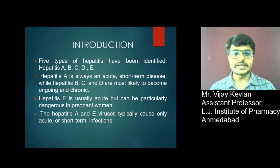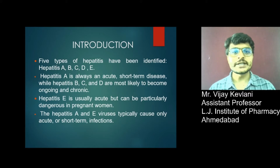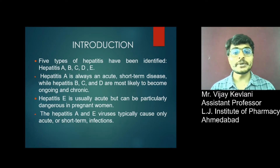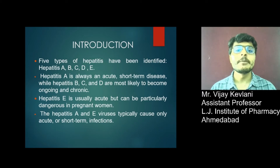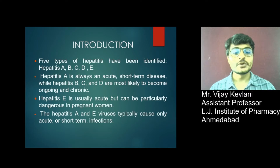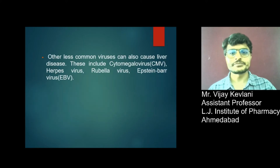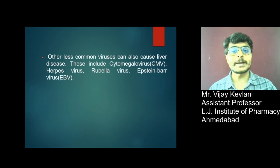In viral hepatitis, 5 types have been identified: Hepatitis A, B, C, D, and E. Hepatitis D is also known as delta hepatitis. Hepatitis A is always an acute short-term disease, while Hepatitis B, C, and D are most likely to become ongoing and chronic. Hepatitis A and E viruses typically cause only acute or short-term infection. Other less common viruses can also cause liver disease, including cytomegalovirus, herpes virus, rubella virus, and Epstein-Barr virus.